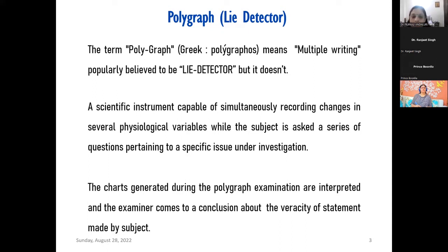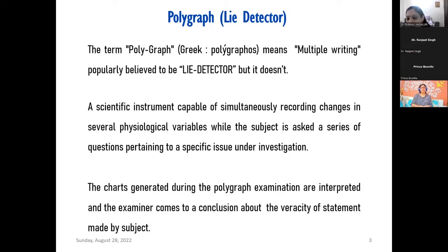Polygraph — the common layman term is 'lie detector,' but actually it doesn't detect lies per se. It's an instrument that records changes in your bodily physiological variables when a series of questions is asked. It's just a recording instrument from a scientific standpoint. Laymen think it will detect lies, because of many misconceptions shown in movies — that it blows a red light or beeps. But nothing of that sort happens. It's a tedious process for an examiner to interpret the charts generated from the examination.